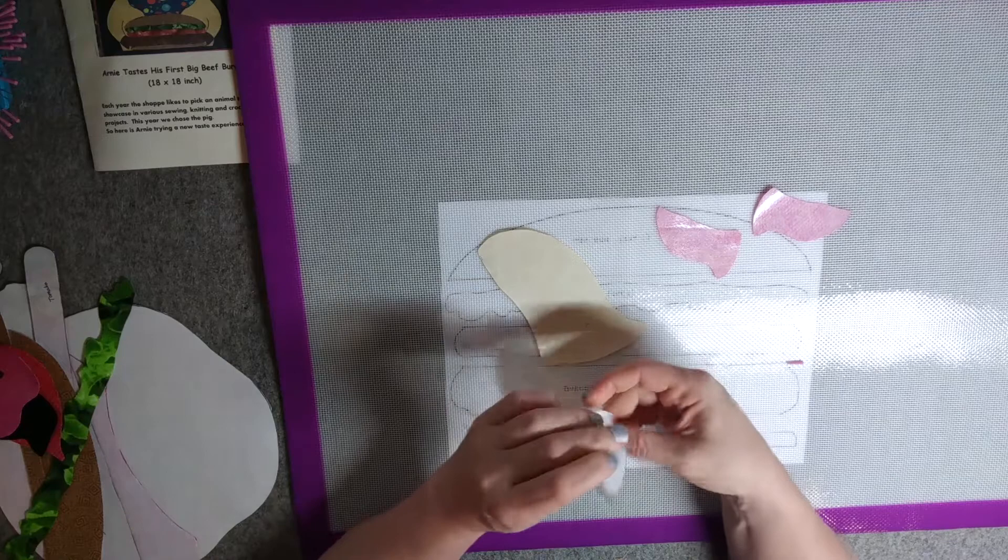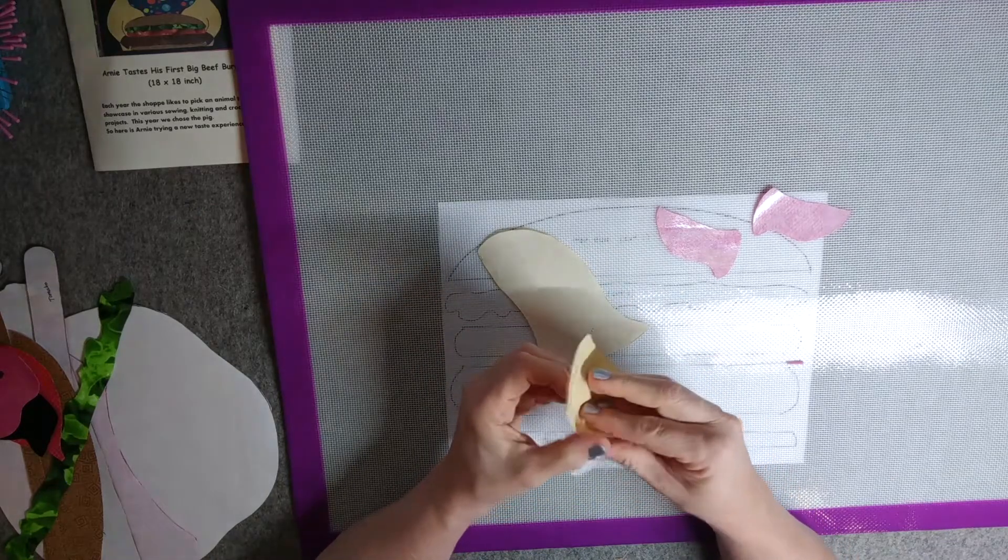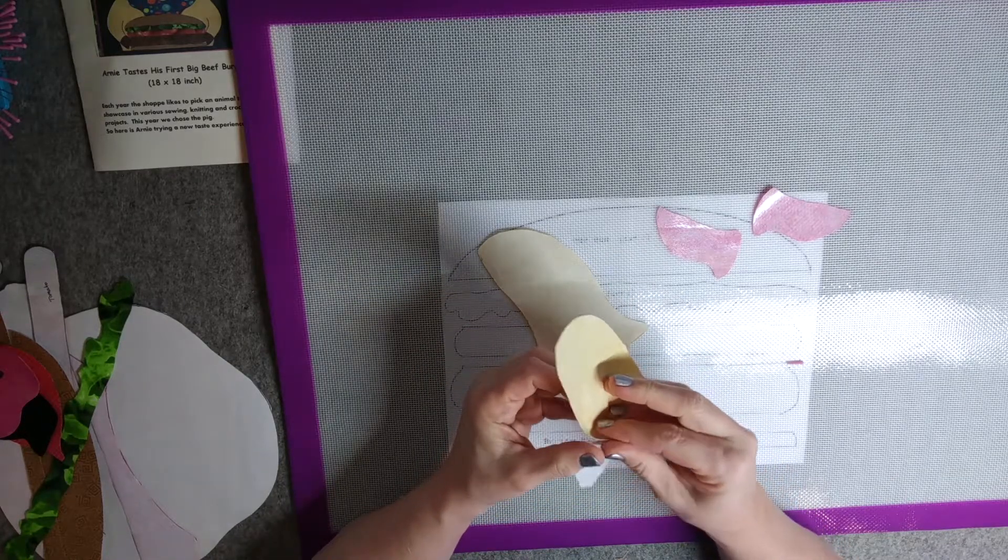If you haven't seen this trick before, it's a handy one to have for applique. We are using Heat and Bond Feather Light Fusible Applique.